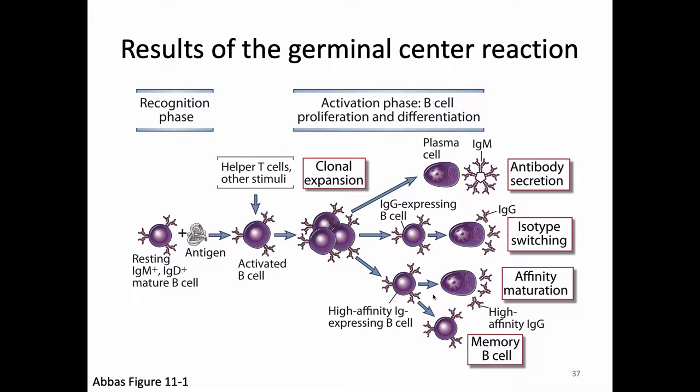Last time I told you about the germinal center reaction. If we have a B cell that has left the bone marrow, it has both IgM and IgD on its surface. It can encounter antigen as well as a helper T cell in order to make a T-dependent response. That cell will move to the germinal center and undergo clonal expansion as well as that mutation process, where we will have mutation of the antibody gene encoding region, particularly in the variable regions of the heavy and light chain.